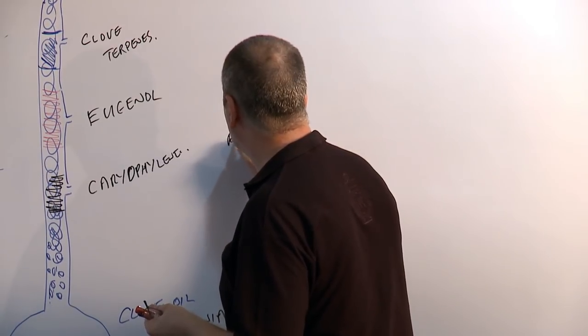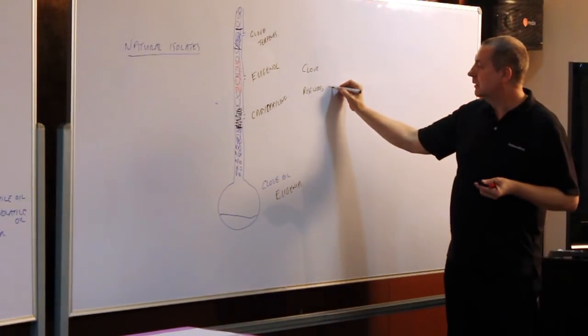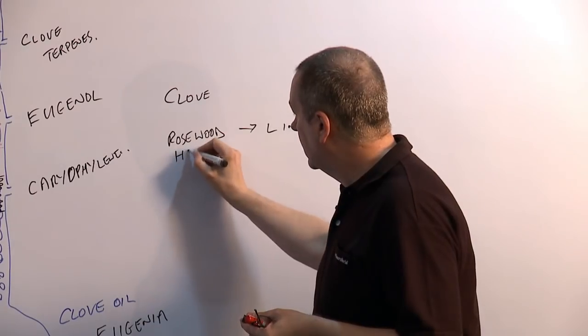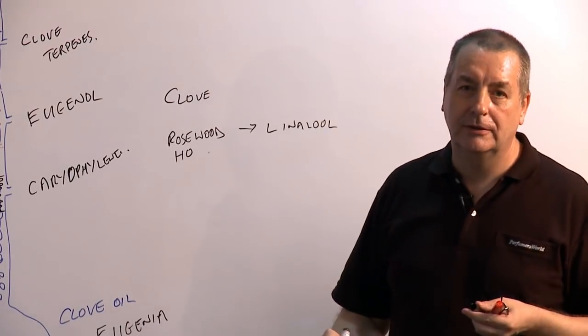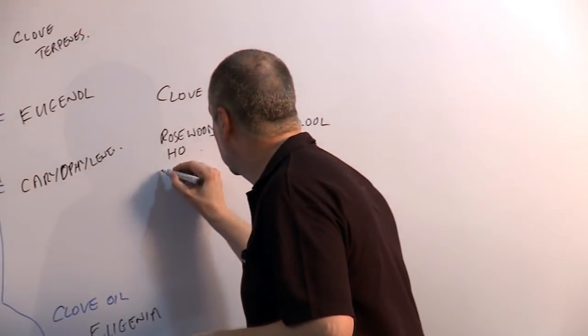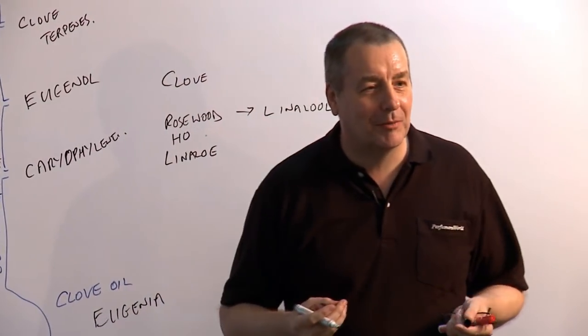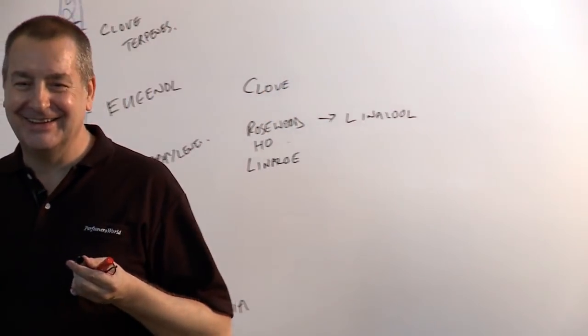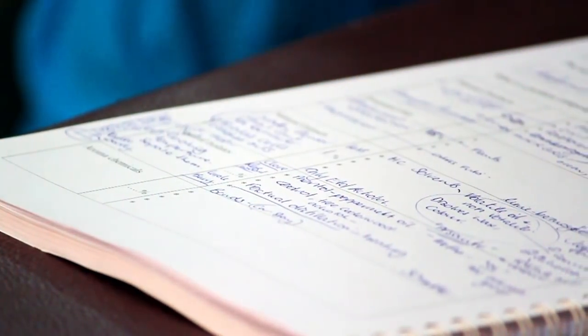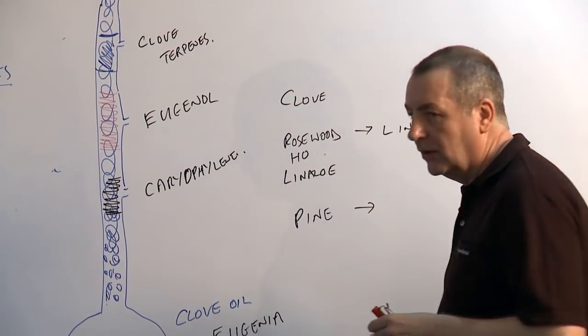It can be used for rosewood, where the main ingredient is something called linalool. Ho oil is another one that's used. But linalool gets its name because it was first found in linalool berries. I wouldn't actually know a linalool berry if you put one in front of me now. But the first time they found this chemical called linalool, it was the alcohol found in linalool berries.